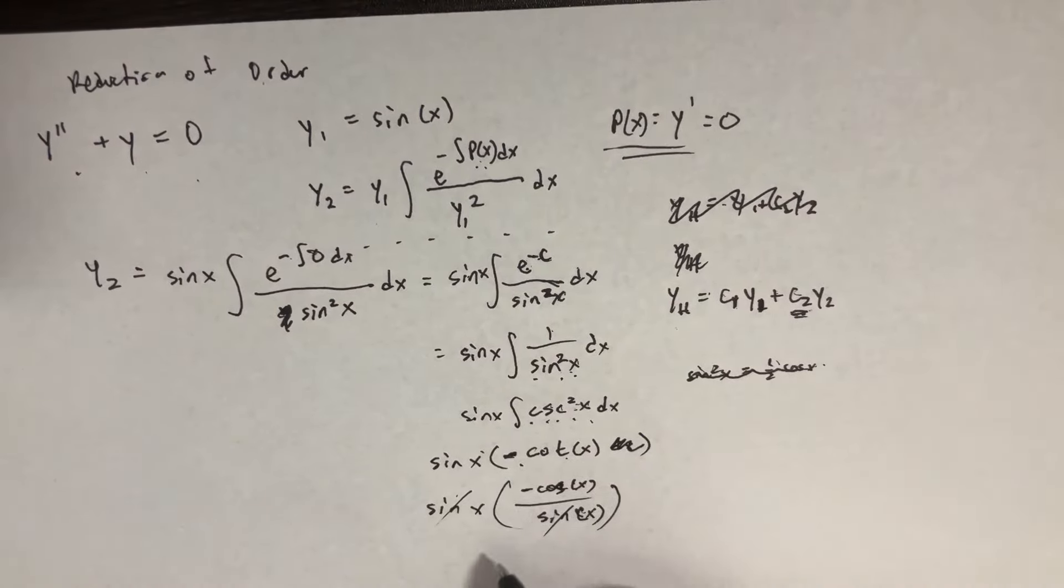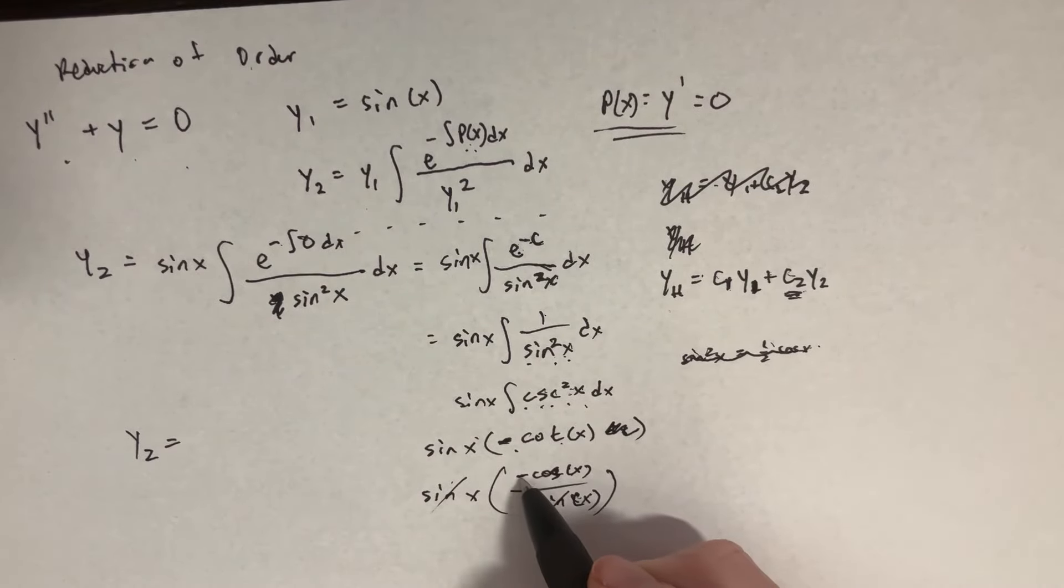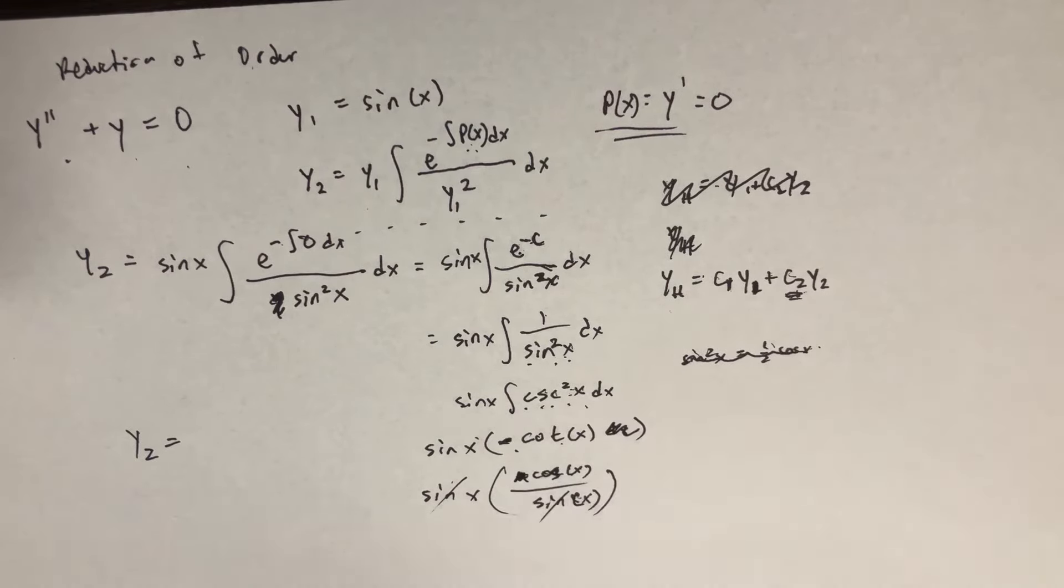I think we have our answer, that y2 is going to be equal to, and let's put this negative sign, let's absorb that into the c2 constant as well, so we don't even have to worry about that.